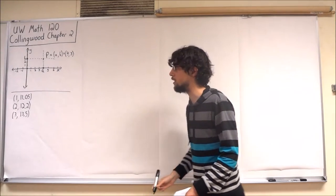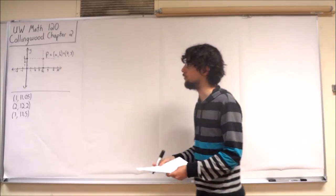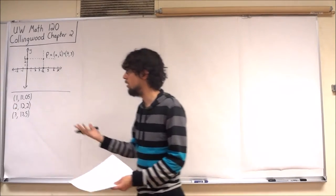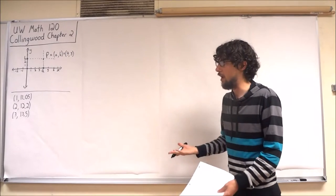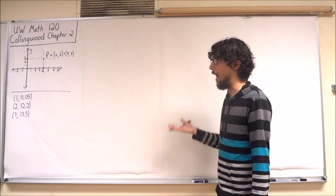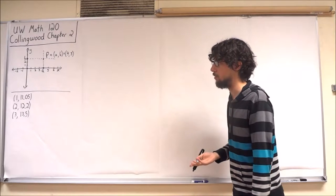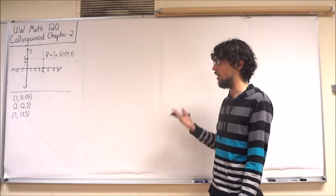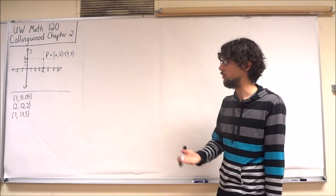After some rounding, these are the first three data points that we're given. Writing them in this sort of ordered pair notation makes me think that I could write them, or draw them as part of a coordinate system. In particular, I could draw a coordinate system and plot the point (1, 11.05) and (2, 12.2).